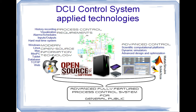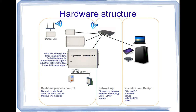In our new Dynamic Control Unit control system, we apply process control requirements — history recording, visualization, alarm schedules, different kinds of inputs and outputs, and a hard real-time system. The dynamic control unit has inside a hard real-time system, meaning control has absolute priority above any other tasks. We have one millisecond sampling time, 64-bit floating point precision — very high precision used in scientific computational platforms — and support for advanced control. We also have support for the standard industrial network Modbus.